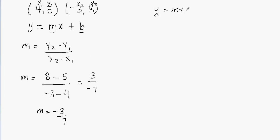Now let's write the equation: y equals mx plus b. So I know what my slope is, so I'll just substitute the value of slope here: negative 3 over 7x plus b.